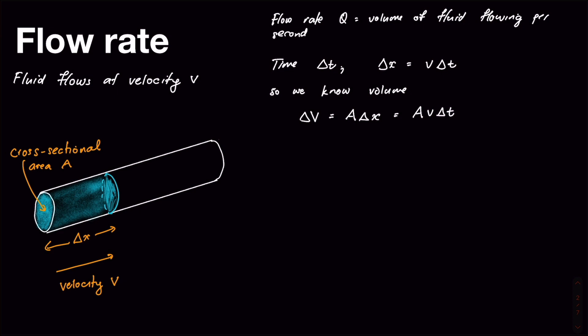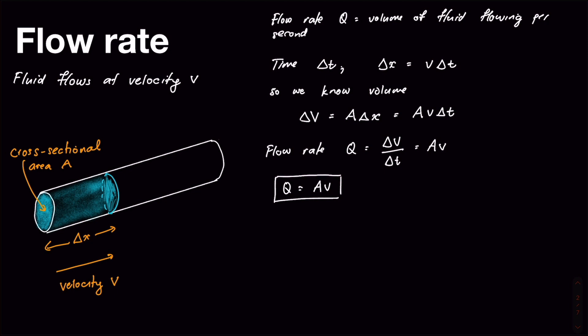Our flow rate Q is obtained by dividing that volume by the elapsed time. So Q equals the change in volume divided by the change in time, which gives us Q = AV. Make a note of this: Q = AV is how we normally determine flow rate. If we know velocity and cross-sectional area, that equation gives us the flow rate.